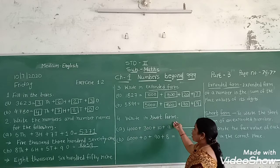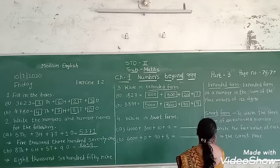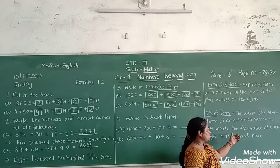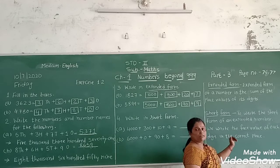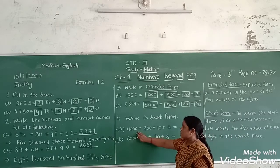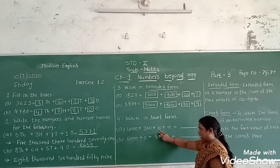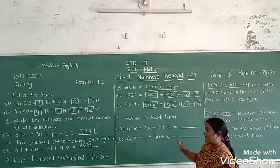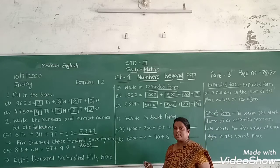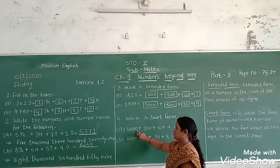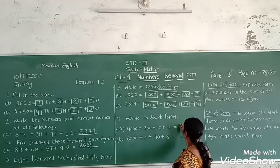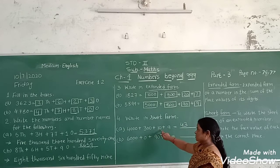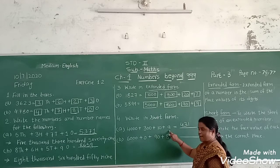Now, write in the short form. What is short form? To write the short form of an expanded number, we write the face value of each digit in the correct place. For example: four thousand, three hundred, ten and nine. We write only the face value of each digit — four, three, one, nine.